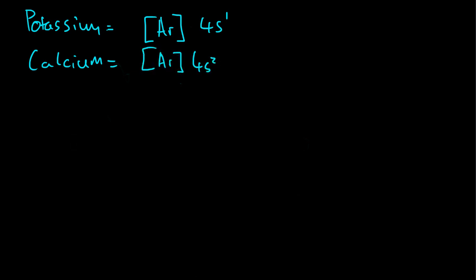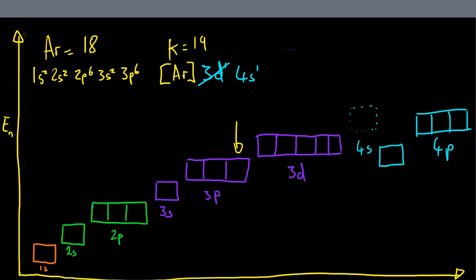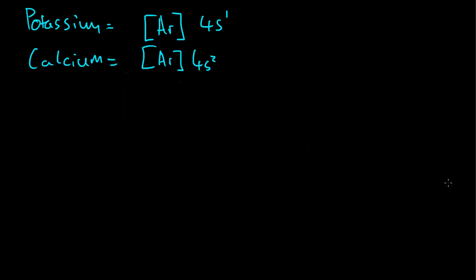So now the next highest sublevel, if we look back on the graph, is going to be the 3d. So elements 21 to 30, scandium to zinc, are going to gradually fill the 3d orbital. So we can write down the electronic configurations in shorthand. So we have scandium, and its shortened electronic configuration is Ar 3d1 4s2.